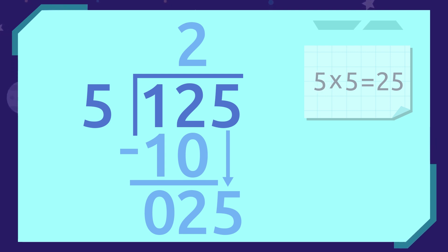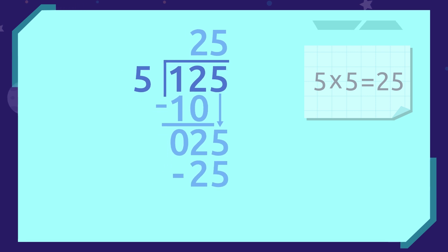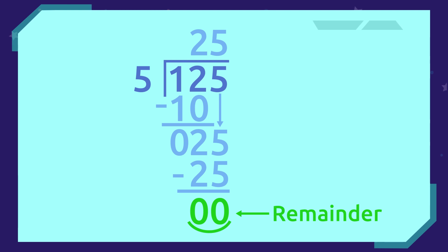5! Great job! We write it down next to the 2 above the division box. As 5 times 5 is 25, we write it down under the first 25 and subtract. 25 minus 25, 0! Exactly! That means the remainder of this division is 0.